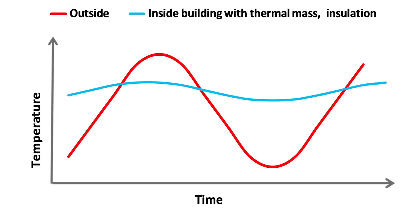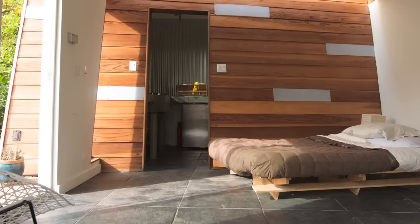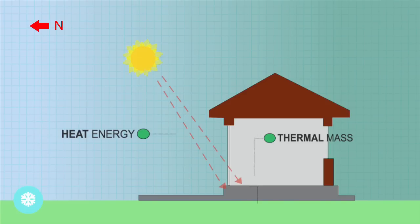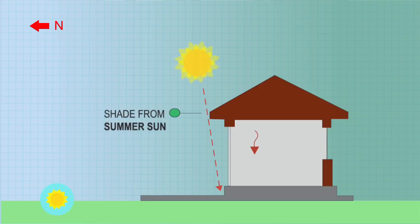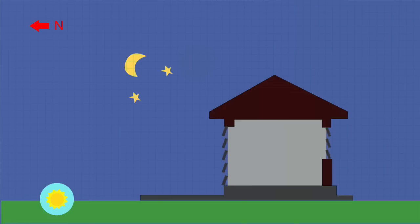With a well insulated, sealed, and ventilated home, thermal mass can even out maximum and minimum temperatures inside a building over 24 hours. Mass doesn't create heat — it just stores and then releases it. In winter, you need mass exposed to sunlight, which will warm up through the day and then release warmth in the evening once the sun is gone. In summer, mass absorbs heat from the air to keep the temperature down during the day and releases it at night when it can be flushed out by cool breezes.